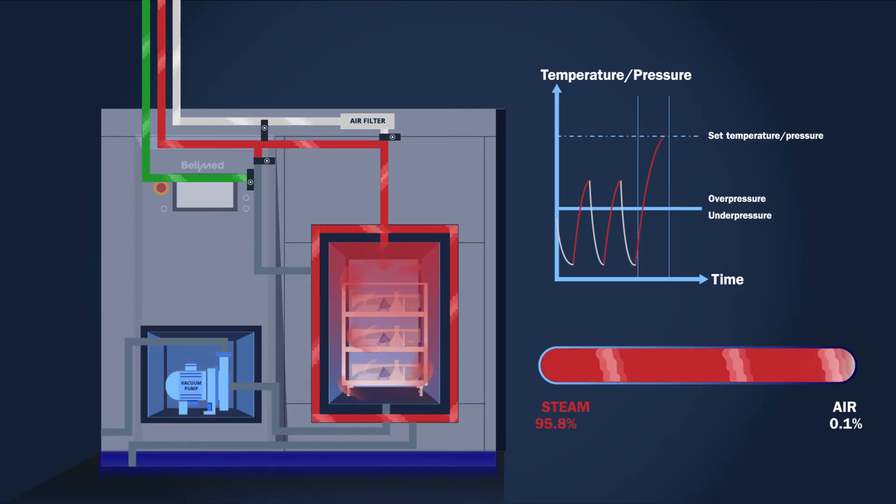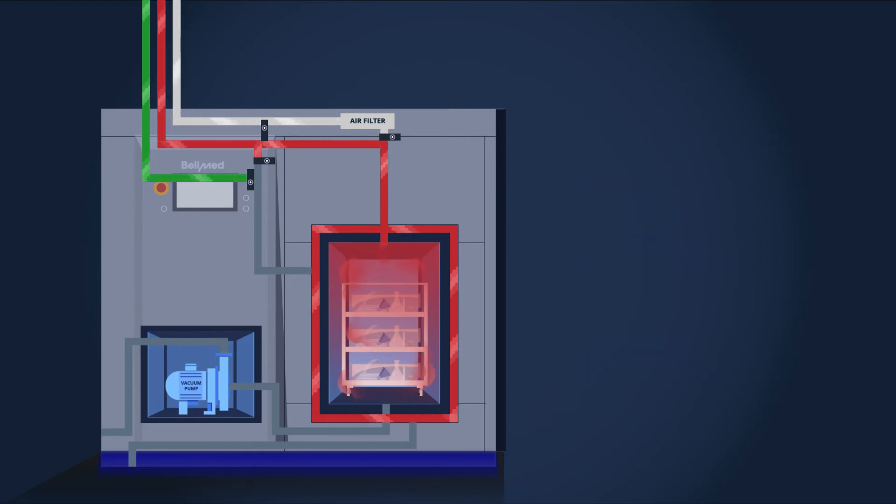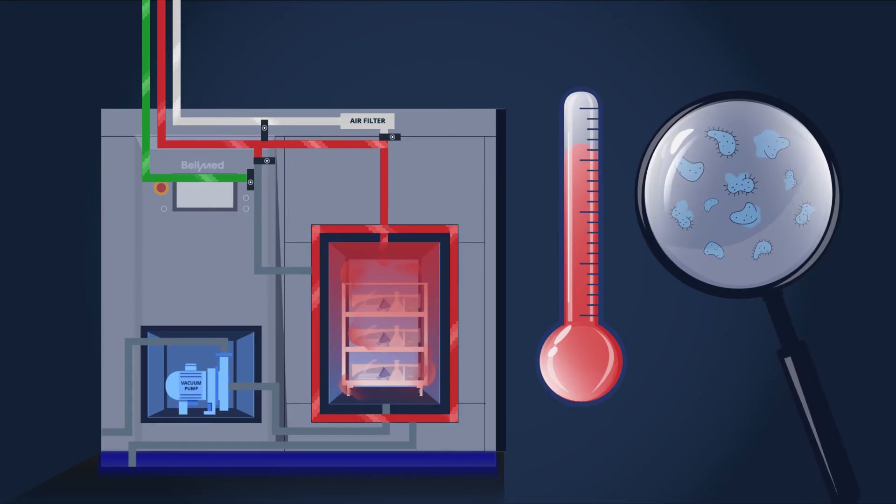Now the sterilization phase can start. The hot steam heats up all goods to the set sterilizing temperature. The heat kills all microorganisms. Depending on the products to be sterilized, the duration of this phase can be adapted.